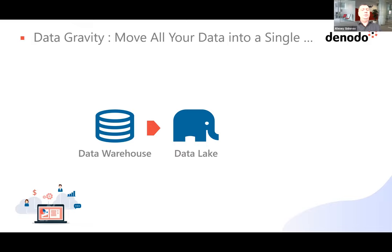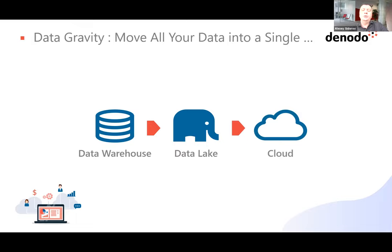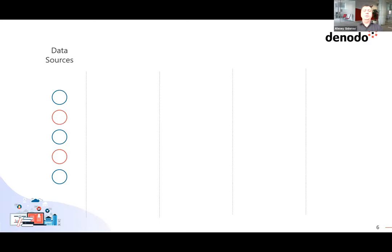We ended up having a lot of data sitting in the data warehouse and a lot of data sitting in the data lake, just side by side in the same organization. Recently I started hearing the story: let's move all the data to a single cloud, and then we can provide the data in a single place for analytical projects, for machine learning and artificial intelligence. Again, my understanding is this is never going to happen, because government legislation prevents us from moving all the data to the cloud, and some company internal regulations mean certain data sets cannot possibly leave the firewalls.